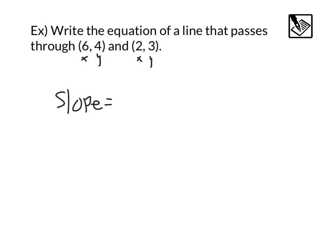So if I calculate the slope, just like we've been doing, I'm going to do 4 minus 3, that's my change in y, and 6 minus 2, my change in x. Again, if you did 3 minus 4 and 2 minus 6, same result. That's going to give us a slope of 1 fourth.